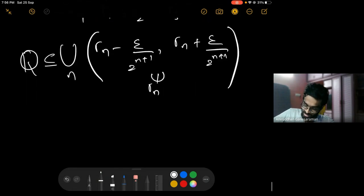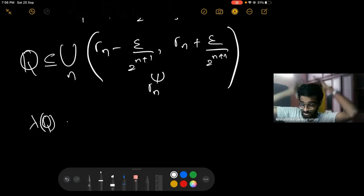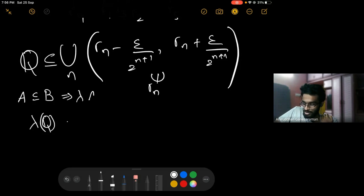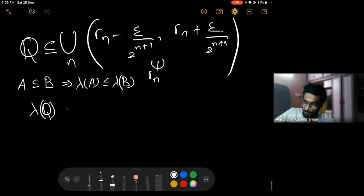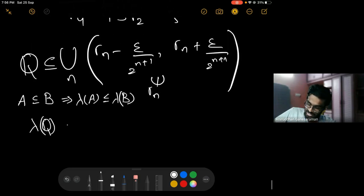Now this is the fun part. The length of rational numbers, if you could assign something to it, is going to be... See, length is something which we want to satisfy nice properties. One nice property we want is if A is contained in B, then length of A should be at most length of B. We don't want a superset to have smaller length than the subset—that would be ridiculous. Since Q is contained in this union, we want this to be less than or equal to the length of this union.